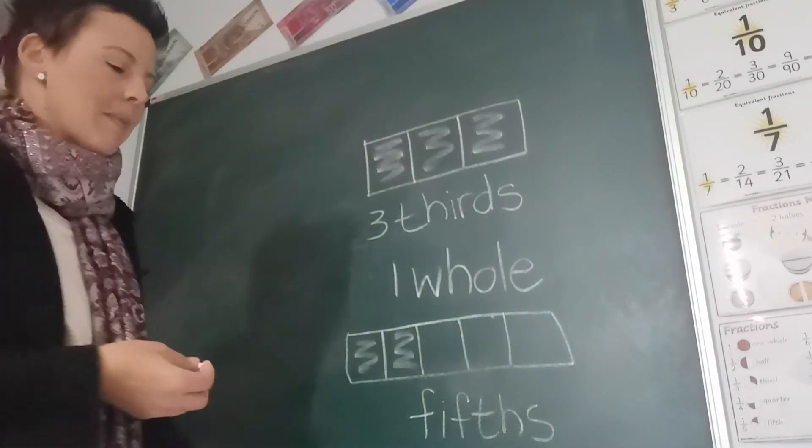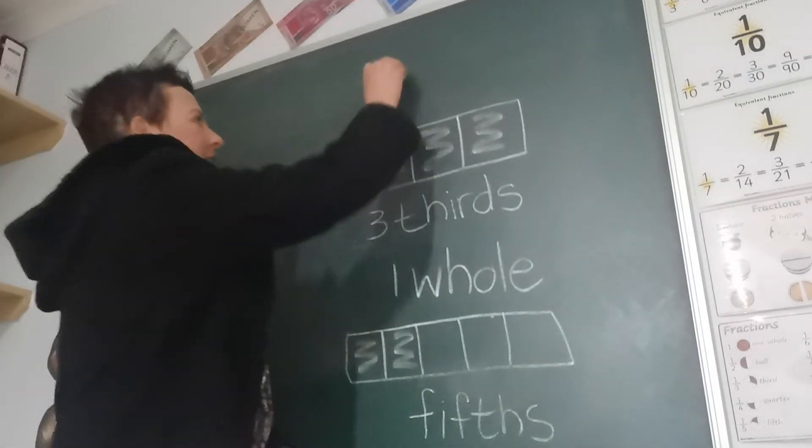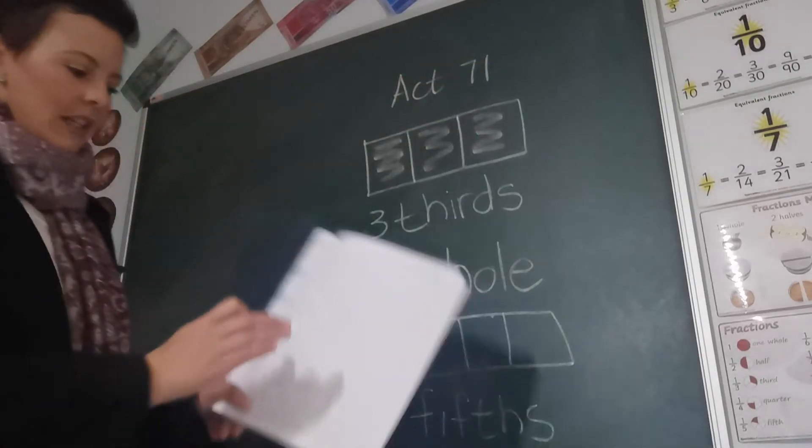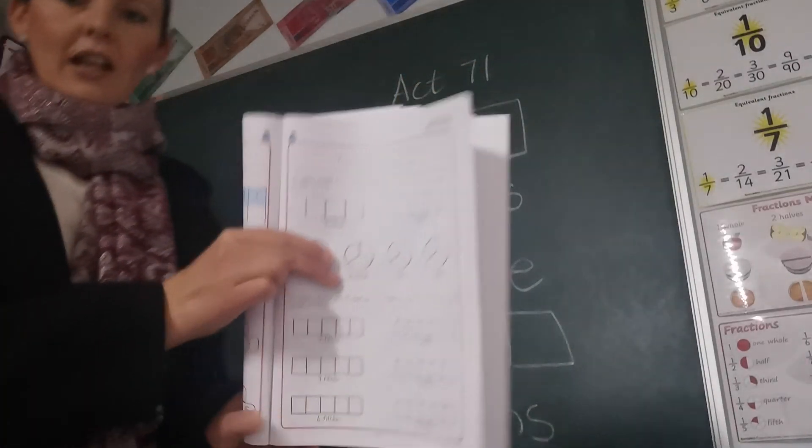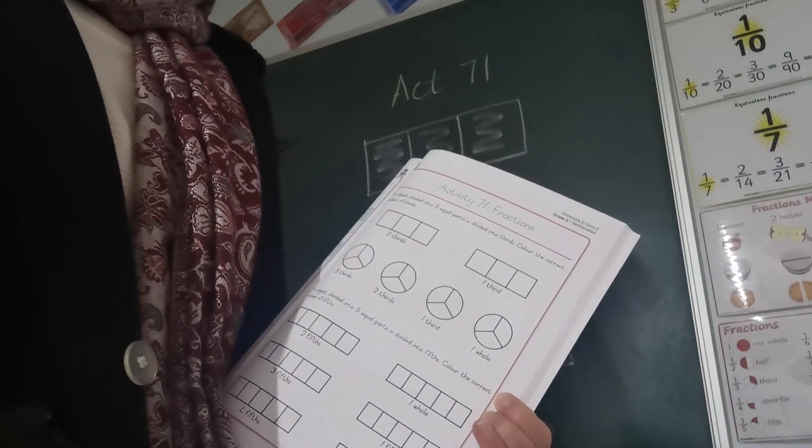Then 5 fifths is the same as 1 whole. Okay. So that was for activity 71 in your workbook. Let's go to activity 72. See you now.